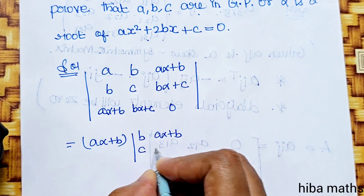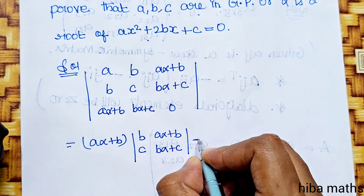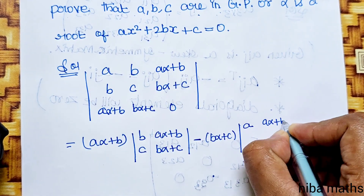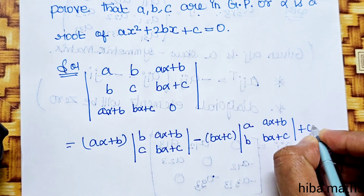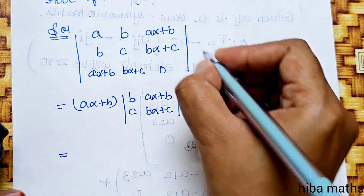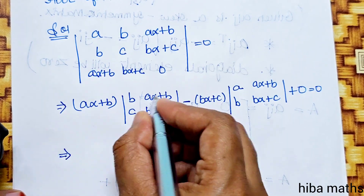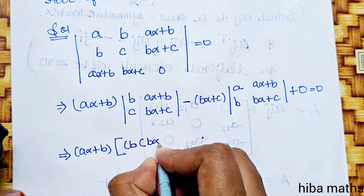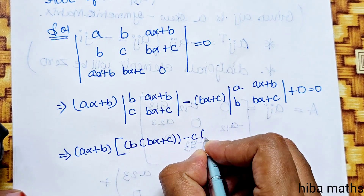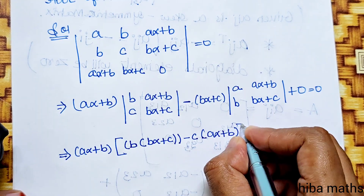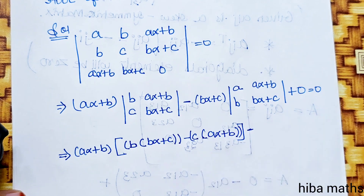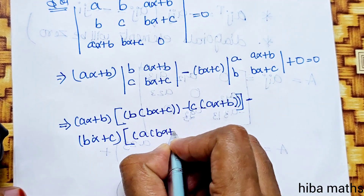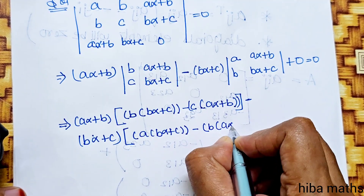Aα+C equals 0. We apply row operations: minus of (Bα+C) into this row equals a(Aα+B), b(Bα+C) plus 0. Then (Aα+B) into this row is multiplied — b(Bα+C) plus equals minus c(Aα+B). Again, minus (Bα+C) into a(Aα+B) into b(Bα+C) minus b(Aα+B).